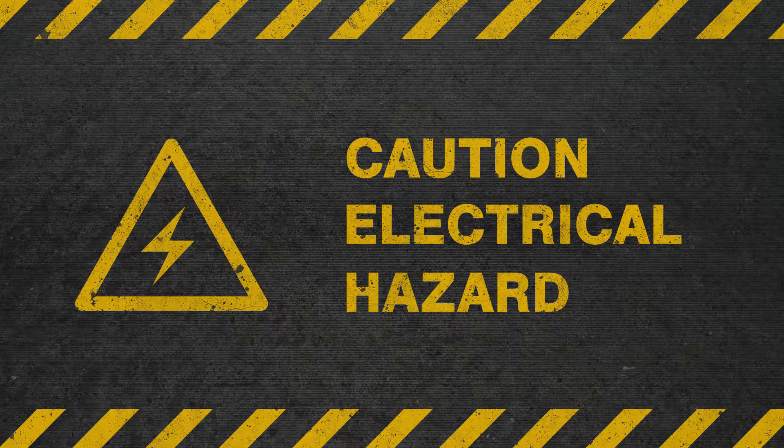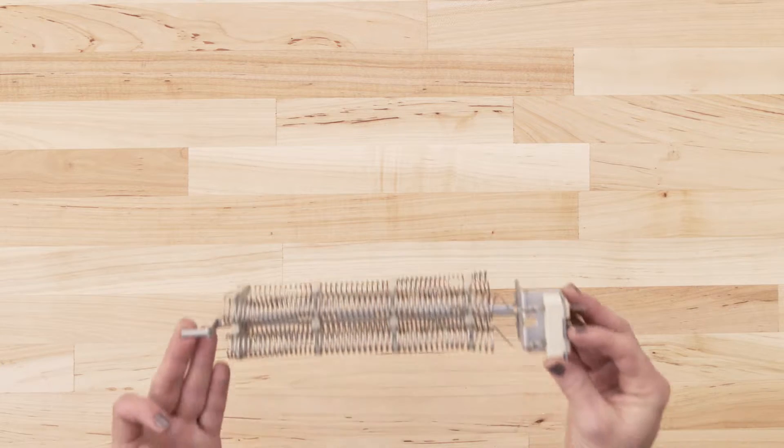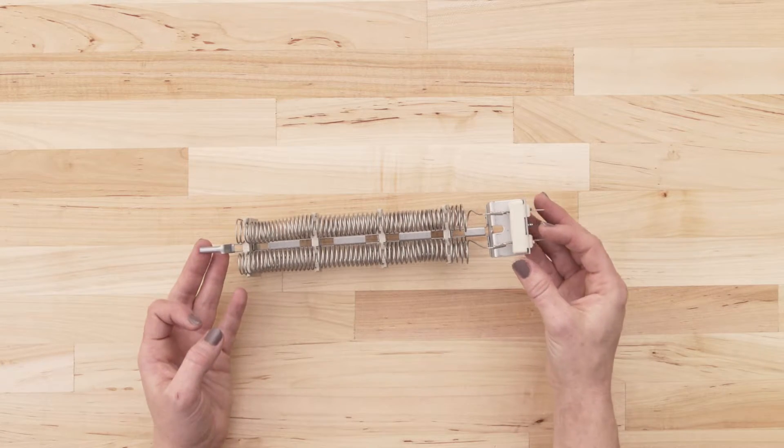To be safe, turn off the breaker and fully unplug the dryer from the receptacle. Now separate or remove the heating element.